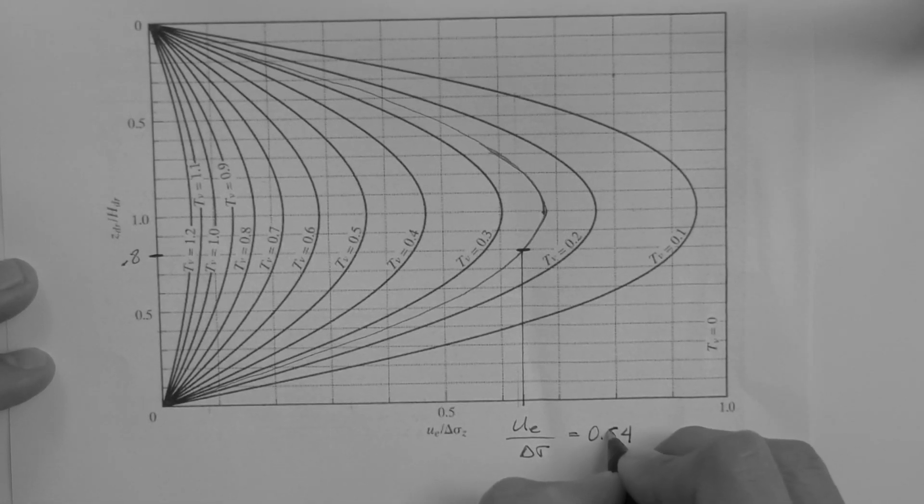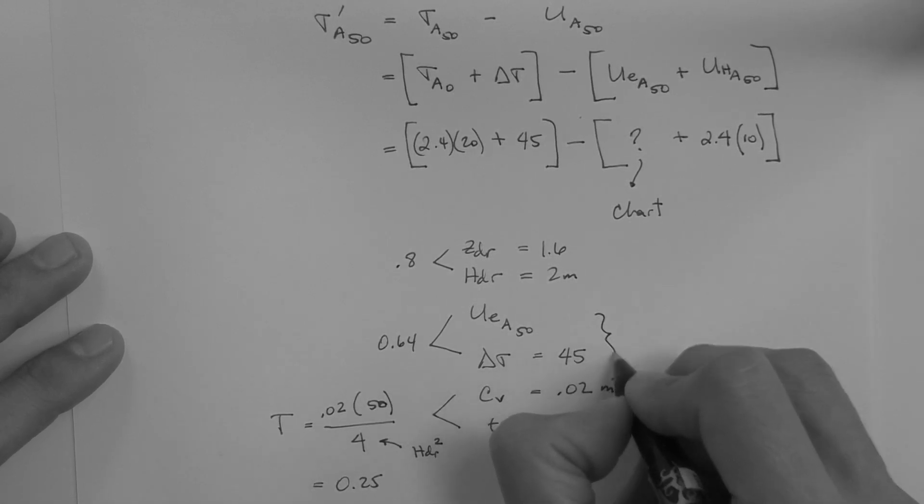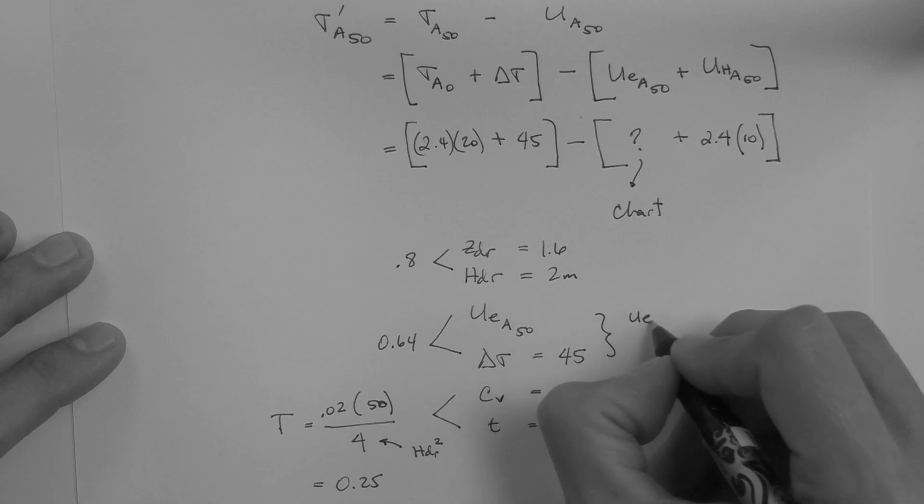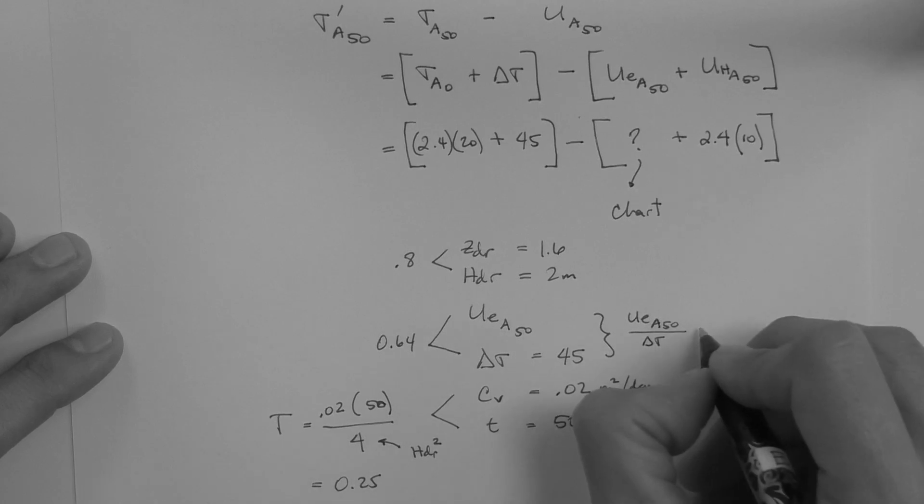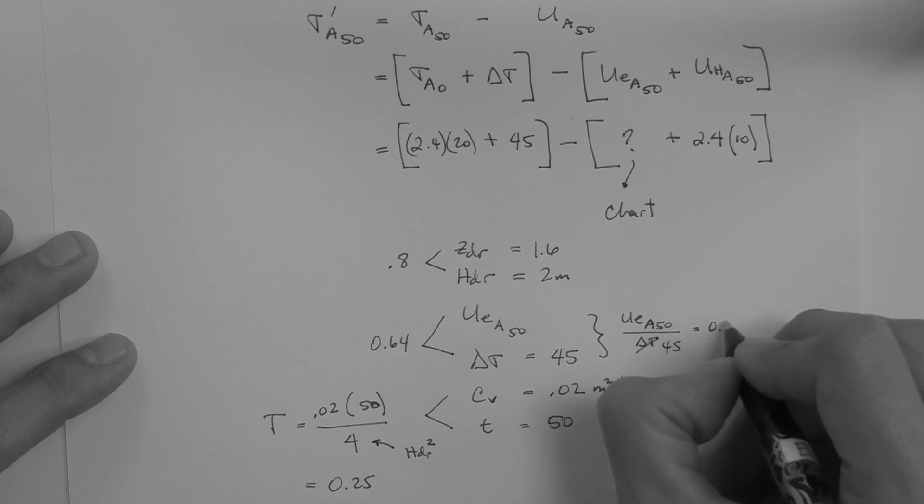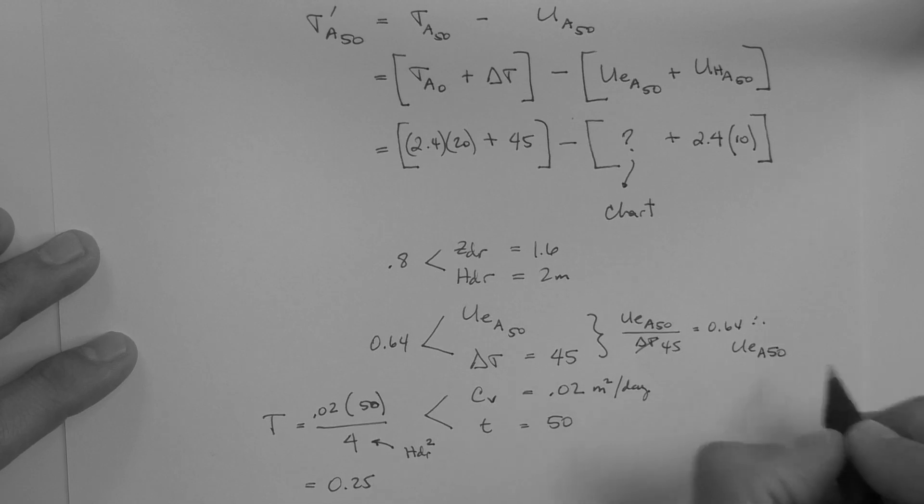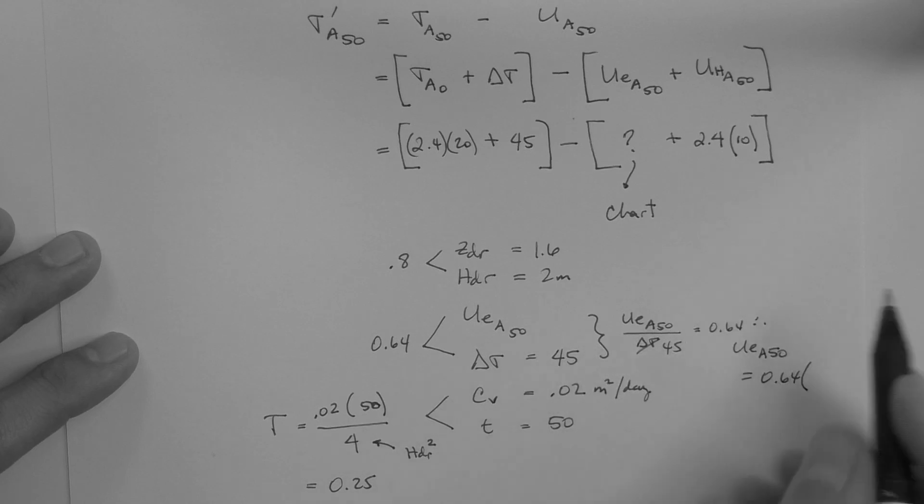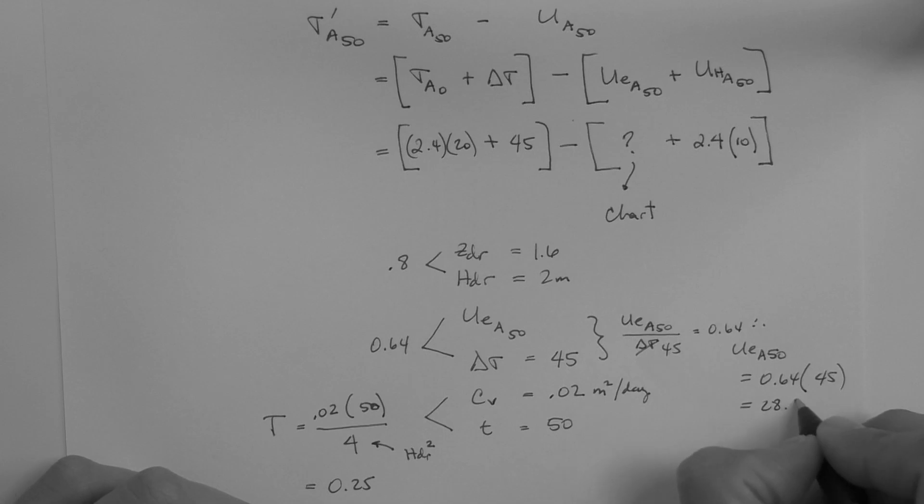0.64. This means that, UE, A50, over delta sigma, which is 45, is 0.64. And, therefore, the excess pore pressure at 0.8 at time equal to 50 days is equal to 0.64 times 45, which is equal to 28.8 kPa.